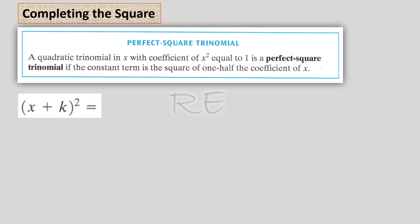A quadratic trinomial in x with coefficient of x squared equal to 1 is a perfect square trinomial if the constant term is the square of one half of the coefficient of x.